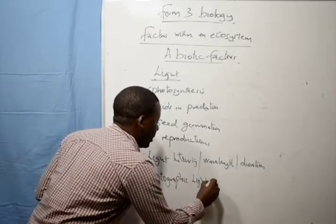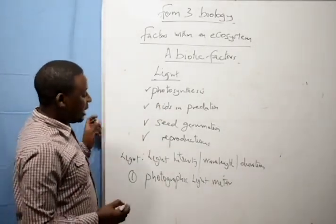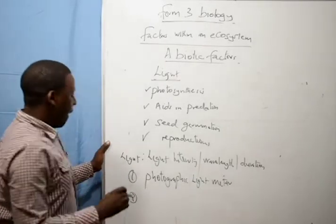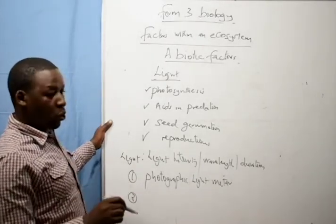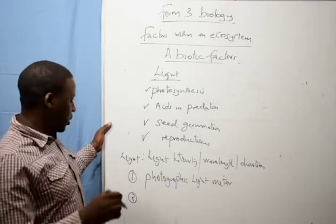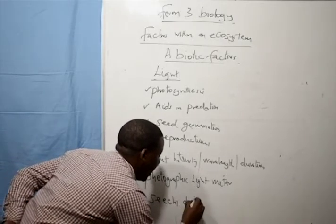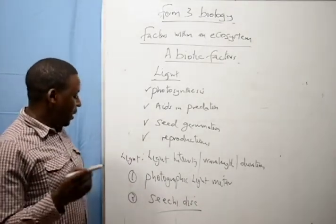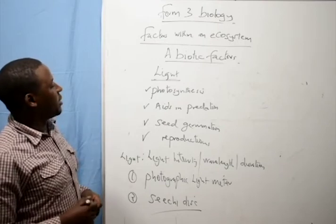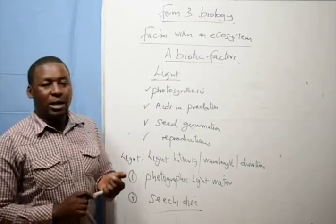Now to measure light in air we use a photographic light meter. A photographic light meter measures light intensity in air. Now to measure penetration of light in water, in water bodies, certain lakes and seas, to measure how much light penetrates in the water we use an instrument known as a Secchi disc. A Secchi disc measures penetration of light in water. Therefore these are the aspects of light that are important in ecosystem. We have come to end of this lesson. I hope you link up the next lesson.